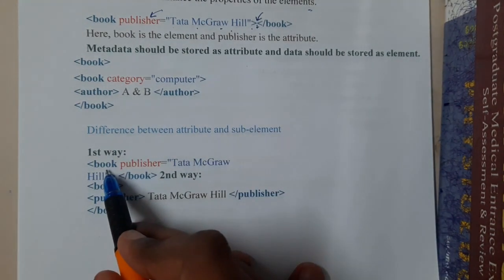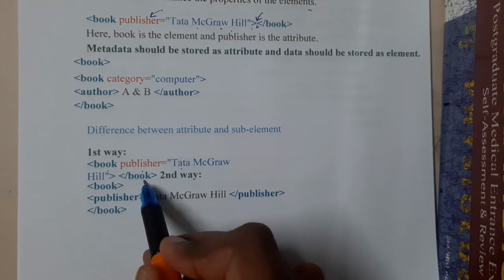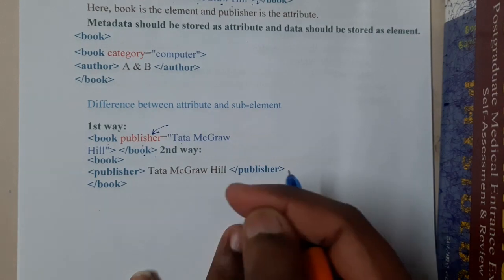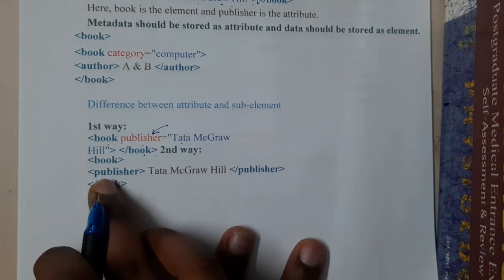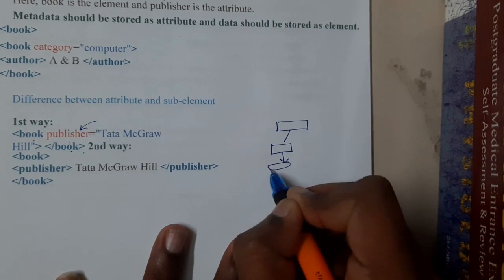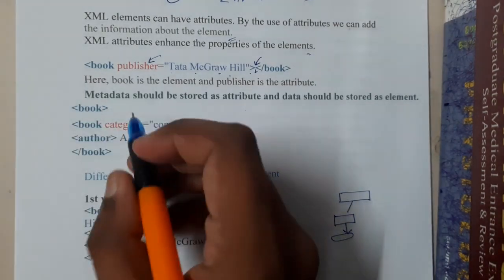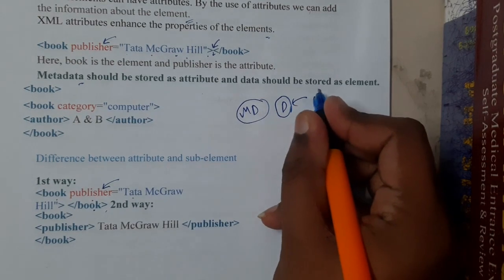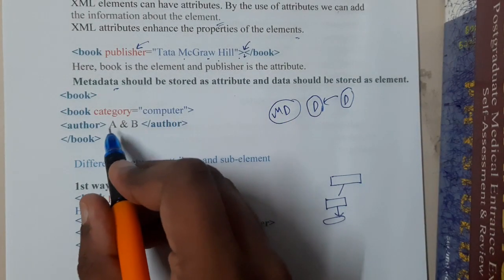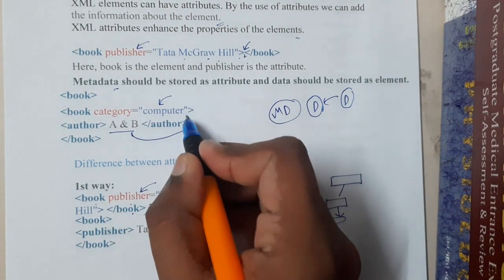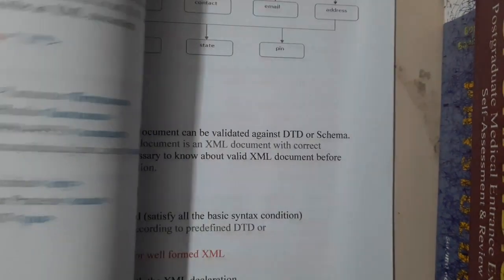There are two different ways to write the same statement. The first way: write the publisher as an attribute — book publisher equals the name of the publisher, then close the book tag. The second way: write a separate child element, with book as parent containing a publisher child element, and the publisher name as its value. This increases the length slightly. You can also say that attributes represent metadata — data about data — giving additional information about an element.